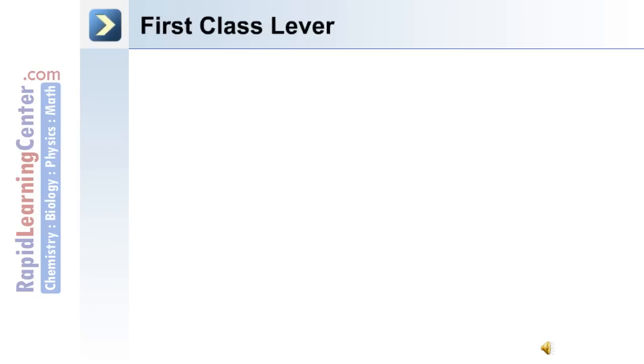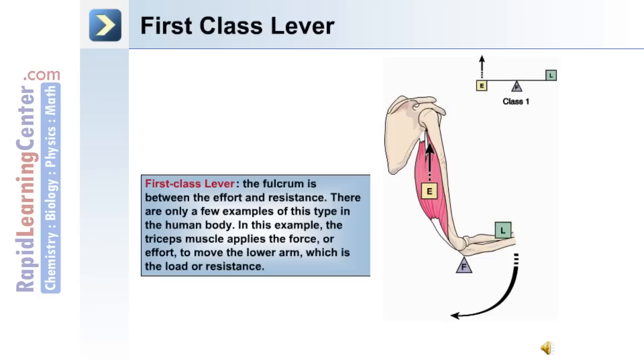The anatomical levers in the human body are divided into three classes. We'll begin by discussing a first-class lever.